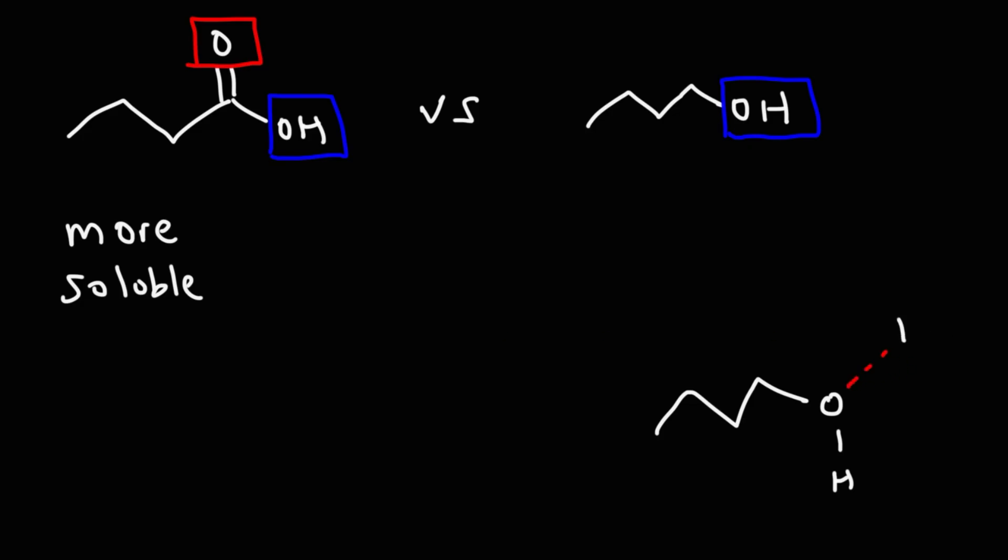So here we have a hydrogen bond acceptor with the oxygen in the alcohol. And here, we have a hydrogen bond donor that comes from the hydrogen in the alcohol. Now, for a carboxylic acid, we could do the same thing because we have the same OH group. The oxygen can be an H-bond acceptor, and the hydrogen can be an H-bond donor.